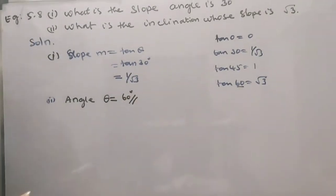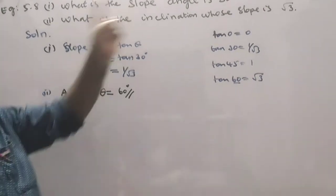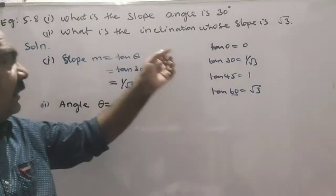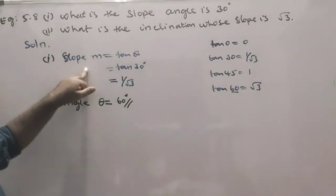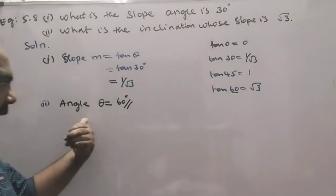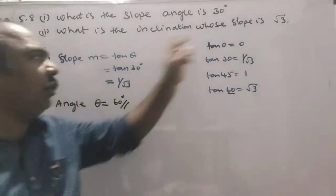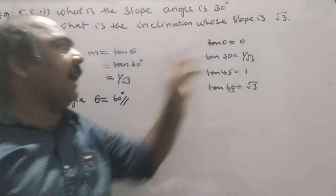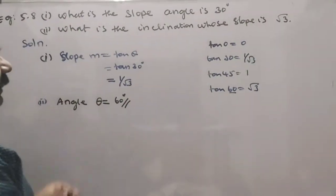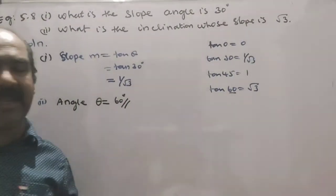Easy question. First question: angle is 30 degrees. Second problem: slope is 30 degrees. Easy problem. Okay, thank you students.